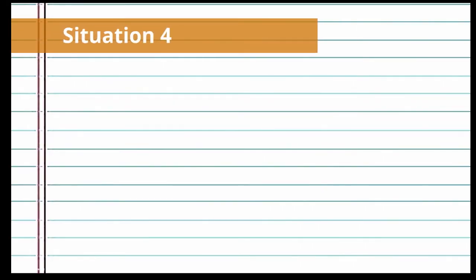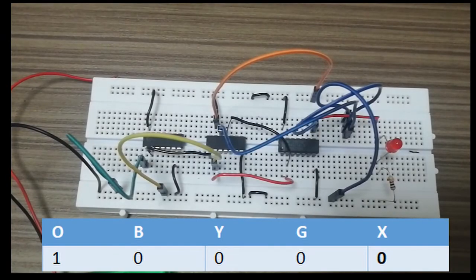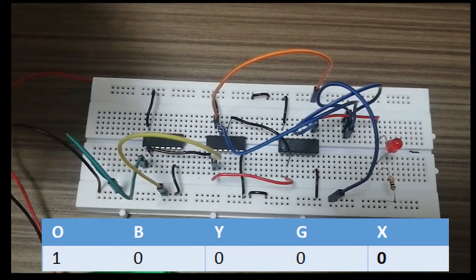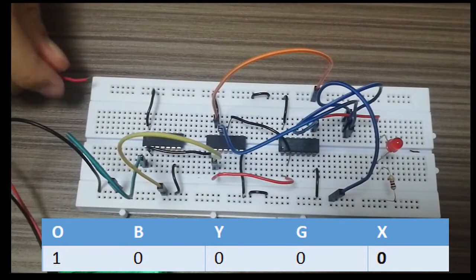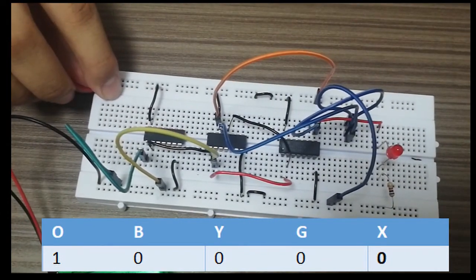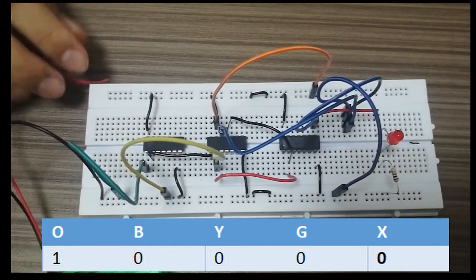For situation 4, when someone is pressing the doorbell but no one says hello, the water in the kettle does not boil for 5 minutes, and no button is being pressed — this is the same as only O connected to high while G, Y, and B are connected to low. When we connect our battery to the circuit, the LED will not light up, which matches our truth table.